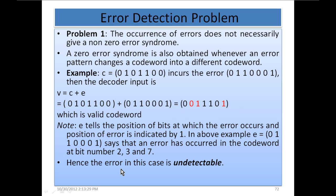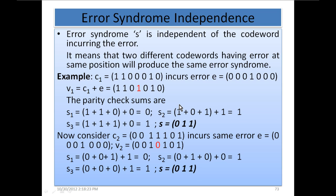Hence the error in this case is undetectable. If the error has occurred in such a manner that it has transformed the transmitted codeword into another valid codeword, then the error cannot be detected. Error syndrome S is independent of the codeword incurring the error — two different codewords having an error at the same position will produce the same error syndrome.